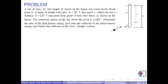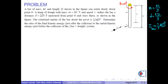A bar of mass M and length D, shown in the figure, can rotate freely about point O. A lump of daf with mass m, which is M over 3, and speed v strikes the bar a distance d, which is 2D over 3 measured from point O, and stays there. The rotational inertia of the bar about the pivot is one-third M times D squared. Determine the ratio of the final kinetic energy just after the collision to the initial kinetic energy just before the collision of the bar-daf system.